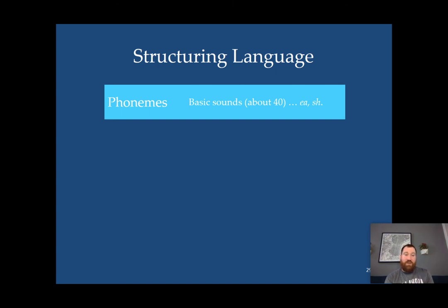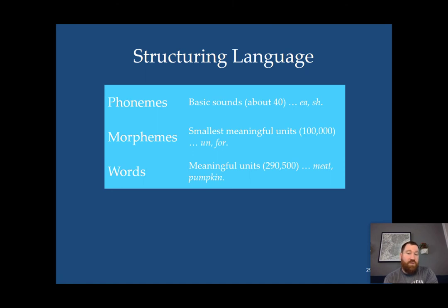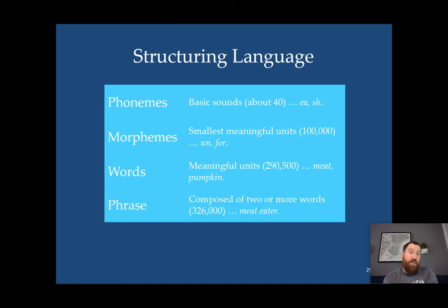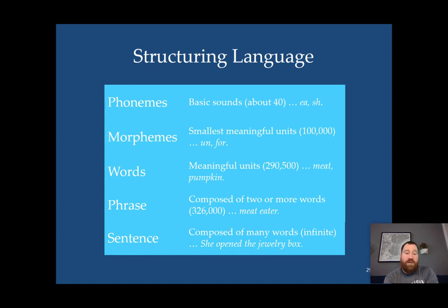Phonemes are the basic sounds in a language — 'phonos' is Greek for sound, like in 'telephone.' English has about 40 phonemes, some languages have over a hundred, and Hawaiian has 13. Morphemes are the smallest meaningful units — suffixes, prefixes, and words themselves. In English there are about 100,000 different morphemes. If we're talking words in English, there are almost 300,000. If we talk about phrases, we're upwards of 300,000 composed of two or more words, and sentences — we're talking infinite combinations.